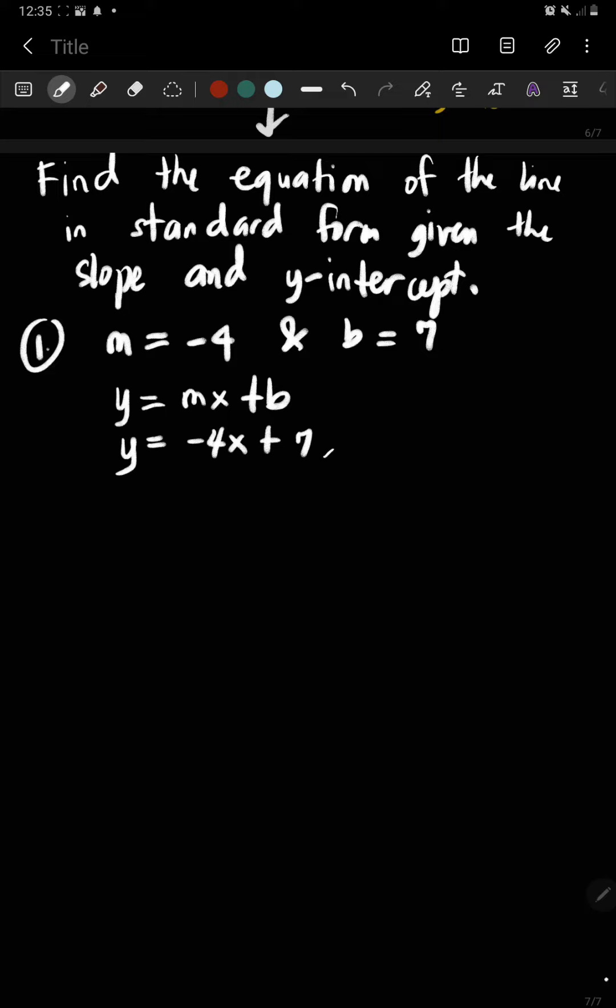And then we need to rewrite this into standard form. So we need to transpose negative 4x that becomes positive 4x plus y equals 7. So this is the standard form of the equation of the line given m equals negative 4 and b equals 7.